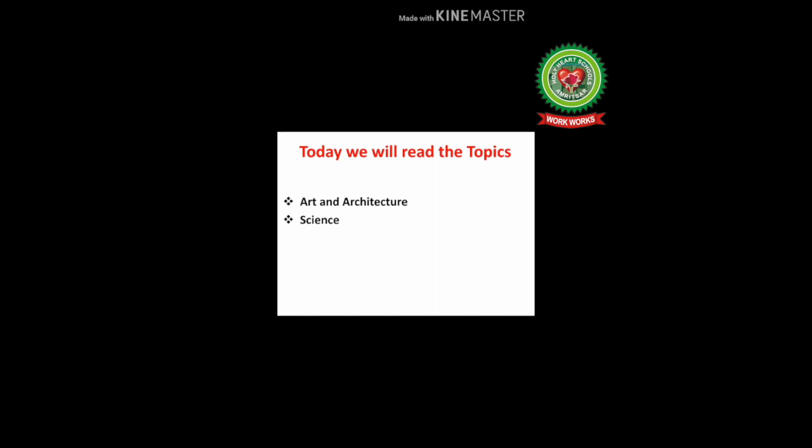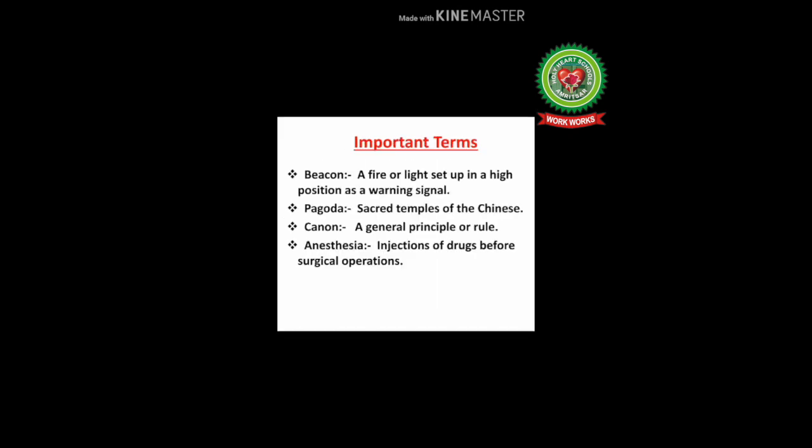In today's class we are going to read the last two main features of the Chinese civilization, which are art and architecture, and science. At the end of today's class you will be able to know about these two features. Have a look at the important terms related to today's topic. Number one: beacon — a fire or light set up in a high position as a warning signal.